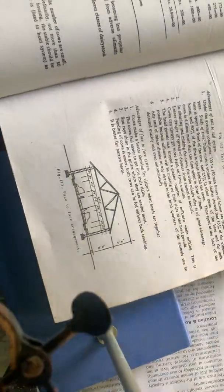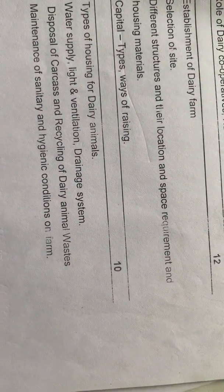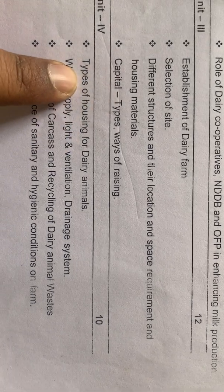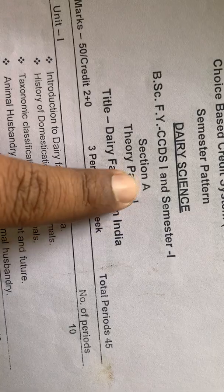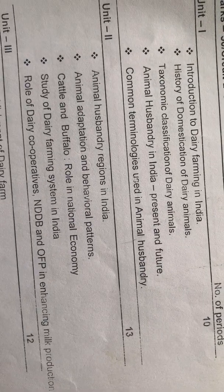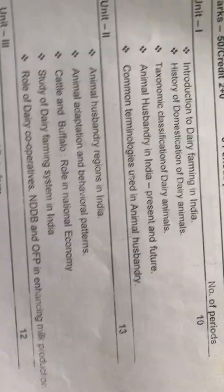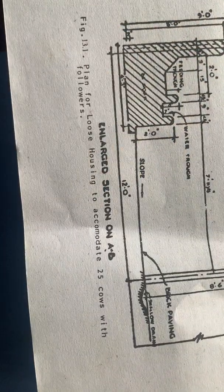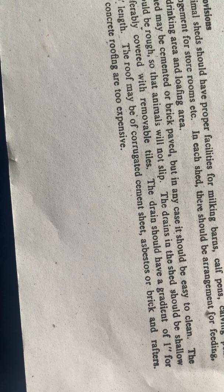Today, we are going to discuss in detail about the housing systems of dairy animals. This is unit number 4, the last one, and this is paper number 1, section first. Let us see in detail about the housing system of animals and understand the importance of the housing system.